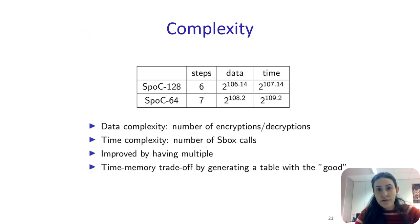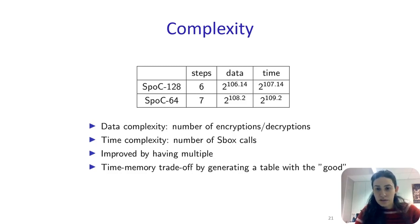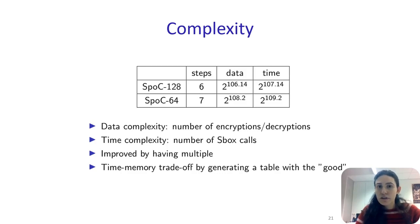The data complexity of this attack corresponds to the probability of the characteristic and is 2^106. The time complexity is measured by S-box calls instead of encryptions and is 2^107. We can improve these complexities by having multiple characteristics with the same output difference delta 1, and in our paper we list some characteristics that can be used. Furthermore, a time-memory trade-off can be used by generating a table with all words satisfying the verification condition, so instead of calling the inverse S-box every time, we can use table lookups.